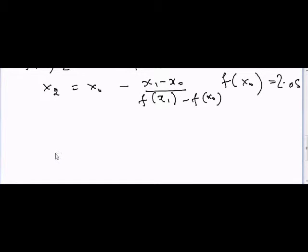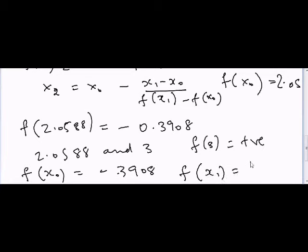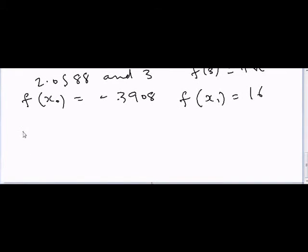So now if we again solve this equation, we have f of 2.0588 is equal to negative 0.3908. And now that means that the root lies between 2.0588 and 3 because f of 3 is equal to positive. So now again we will go for another approximation and we can calculate f of x₀ is equal to negative 0.3908 and f of x₁ is equal to 16, and then we can solve again for x₃.